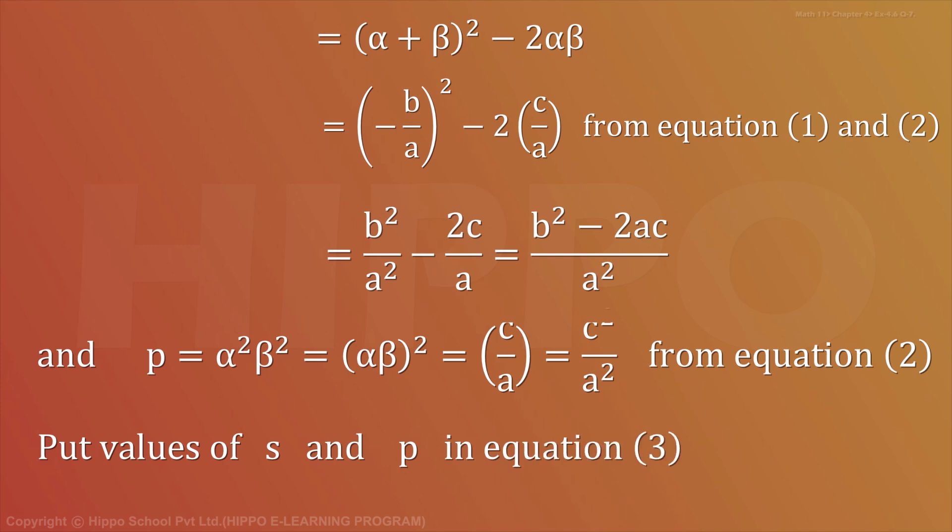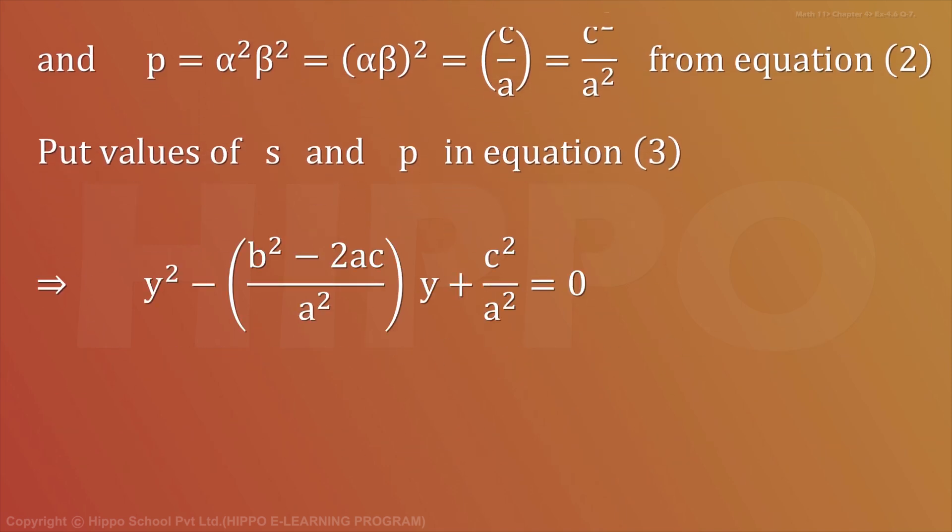اب put values of s and p in equation number 3. Equation number 3 میں s اور p کی values put کرتے ہیں: y² - [(b² - 2ac)/a²]y + c²/a² = 0. LCM لیں گے تو a²y² - (b² - 2ac)y + c² = 0. جو divide میں a² ہے وہ right side پہ جا کے 0 ہو جائے گا تو a²y² - (b² - 2ac)y + c² = 0 is the required equation.